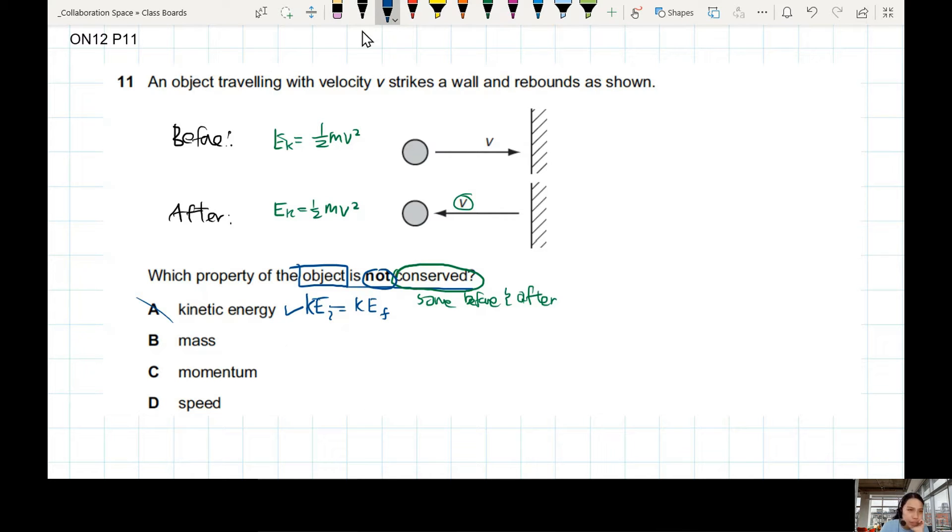Mass. Is mass conserved? It should be. If this fella got mass M, after hit the wall, it didn't break apart, right? It didn't become cloud. It didn't gain something extra. So it should be the same. No change in mass. We assume. They didn't tell us anything that happened.